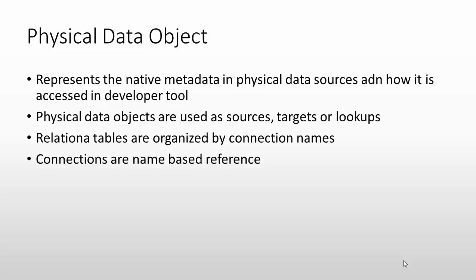Physical data objects are treated as either a source, target, or lookup table. Relational tables are organized by connection name — for example, a customer table or address table in a relational database can be used as a source or target table. Connection names are reference-based: the name we create is just a logical name, while the actual physical table resides in the database. That logical reference is used during creation of mappings or maplets.